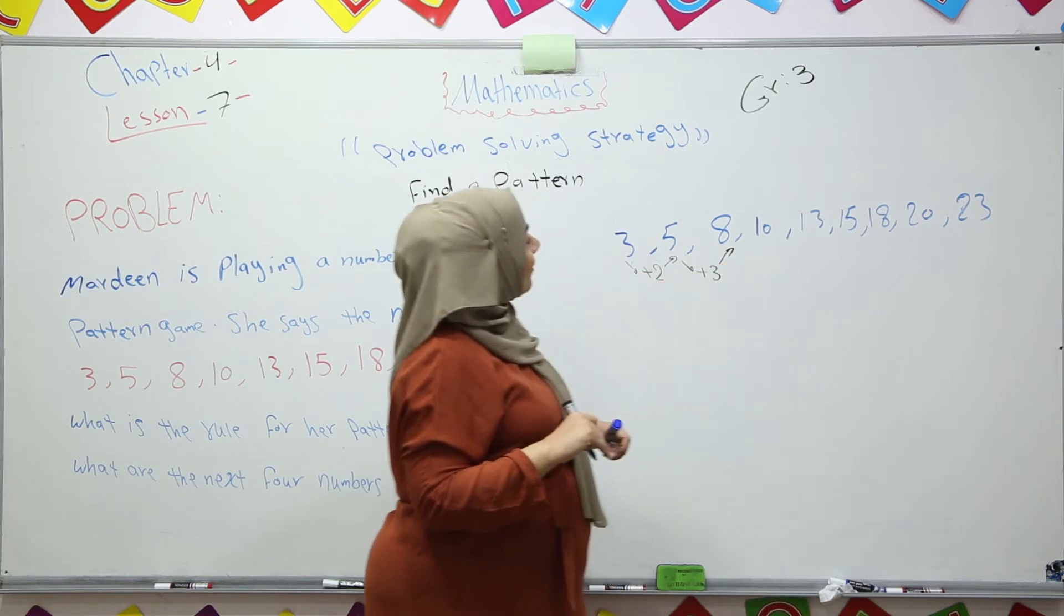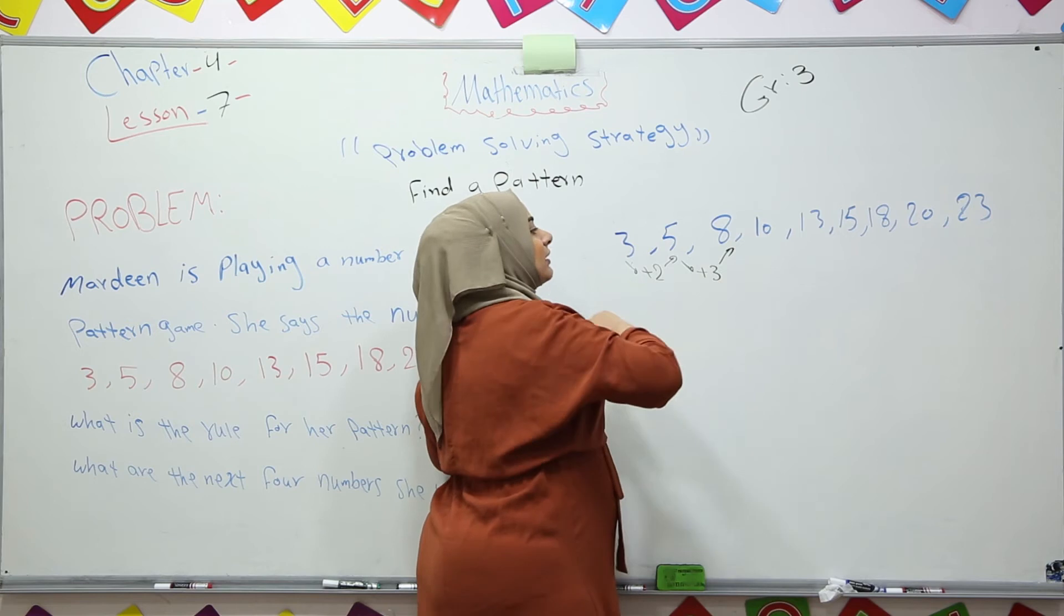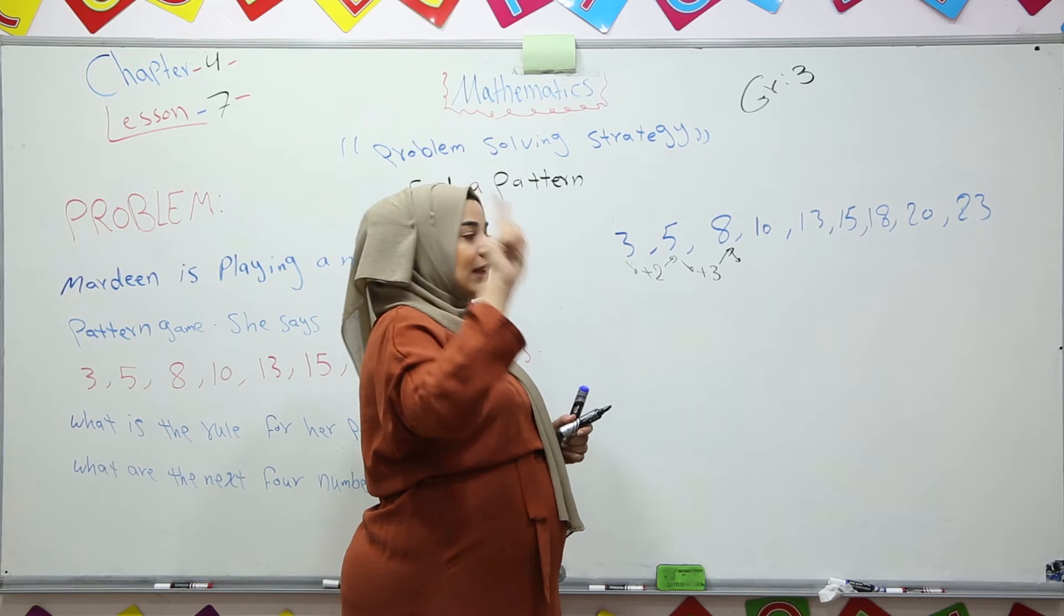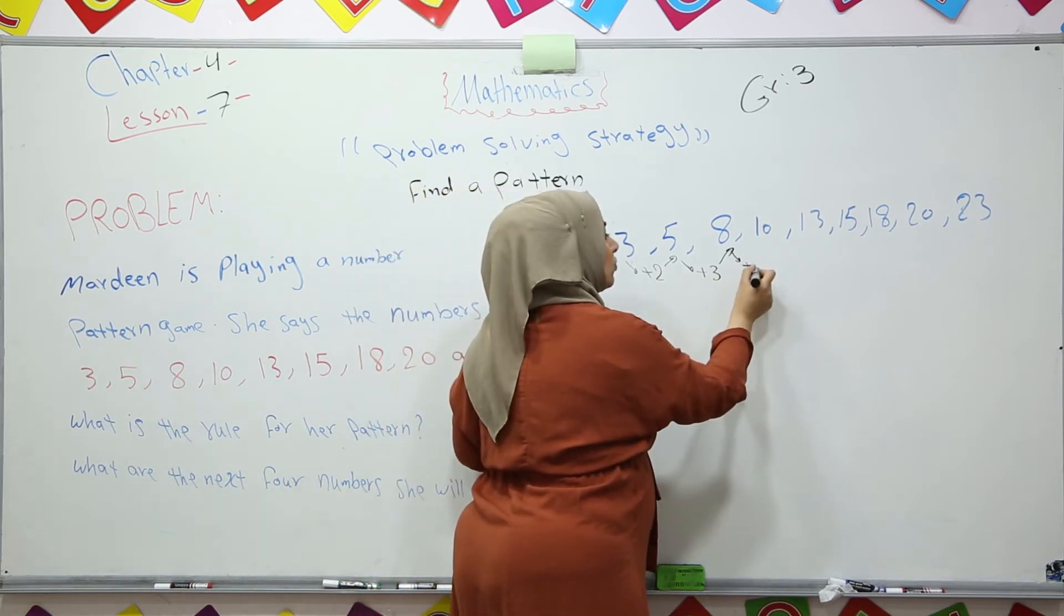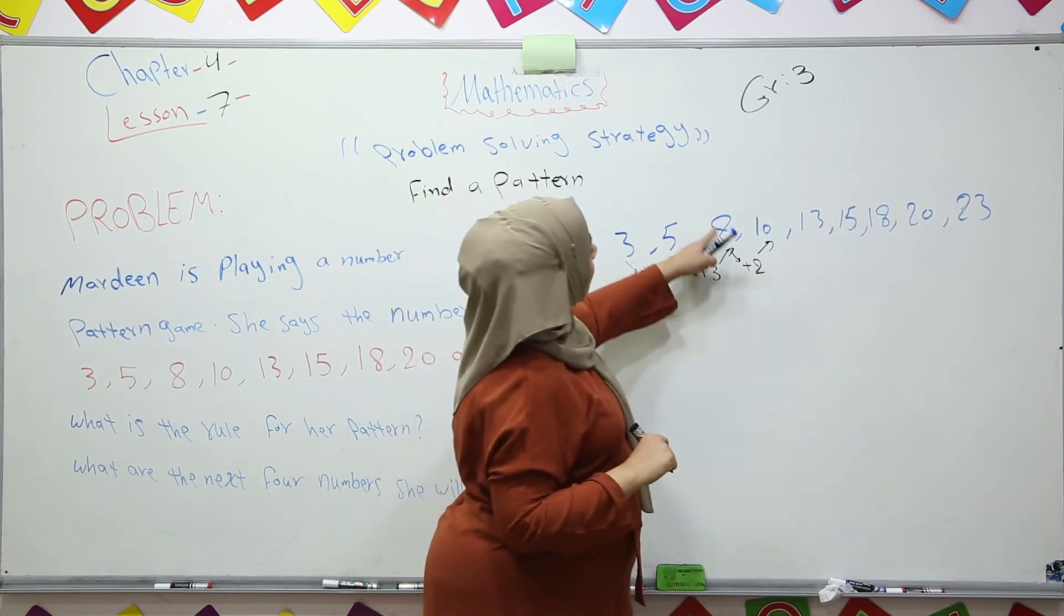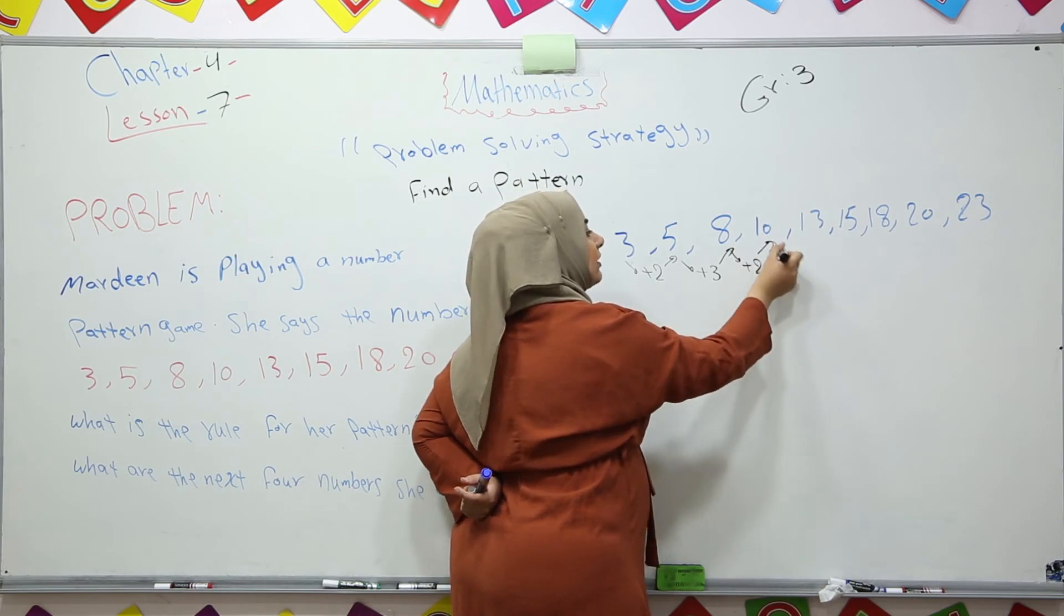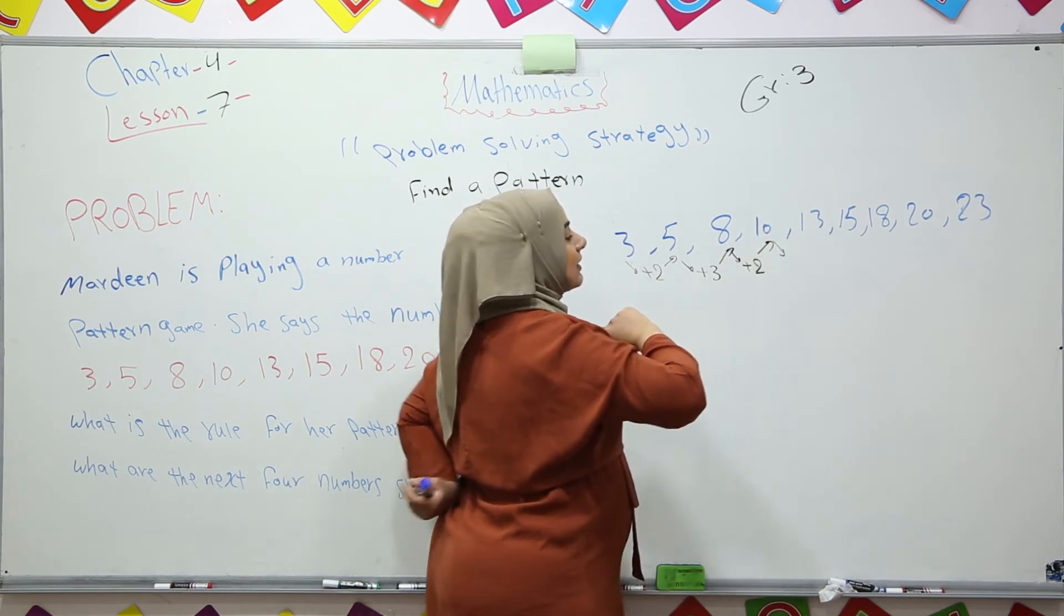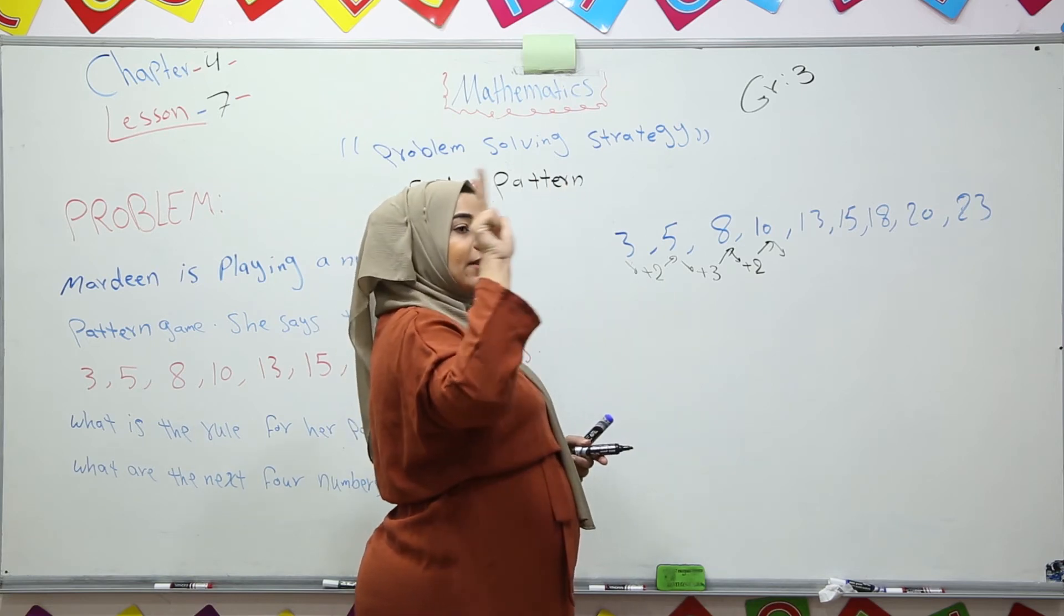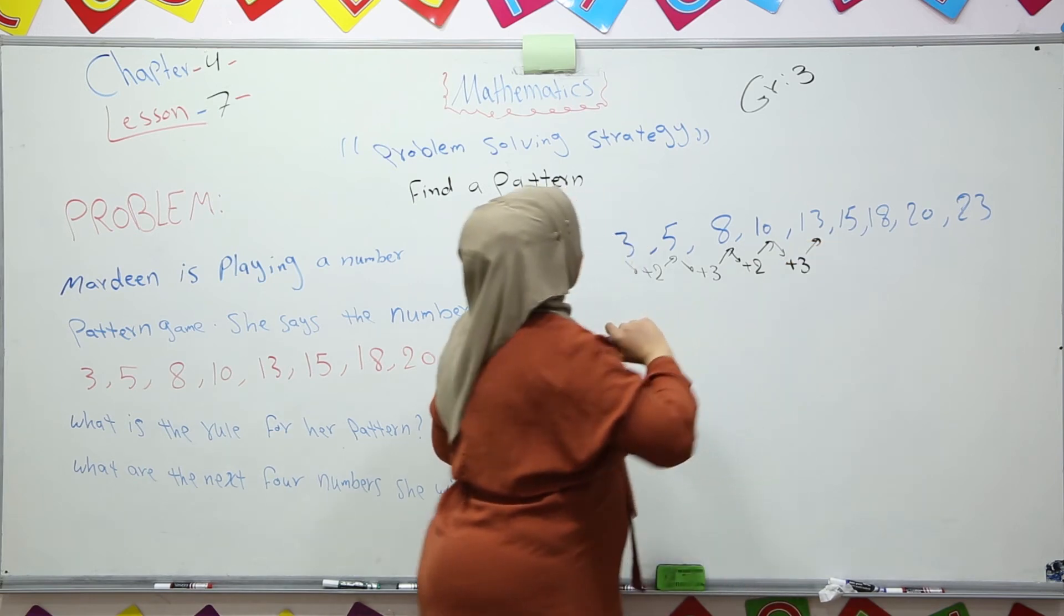After 8, we have 10. We added how many numbers? 8, 9, 10. Plus 2. So again, we add two numbers, we got 10. Then we got 13. 10, 11, 12, 13. So we add three numbers to 10, we got 13.